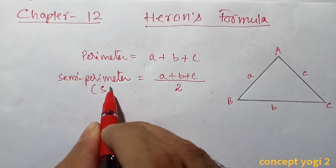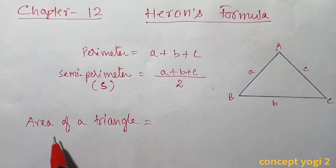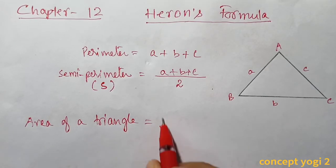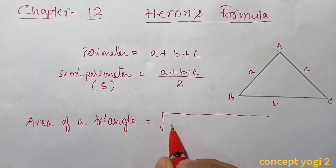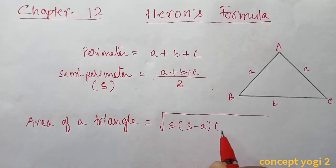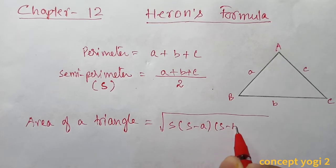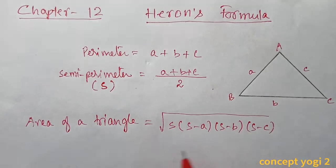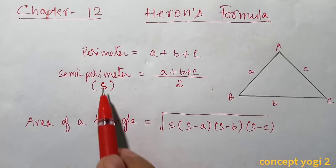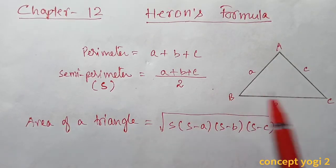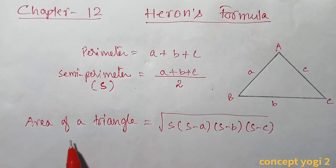So Heron's formula for the area of a triangle is: Area = √(s · (s−a) · (s−b) · (s−c)), where s is the semi-perimeter and a, b, c are the measures of the sides. Now by using this formula, we shall solve the questions given in Exercise 12.1.